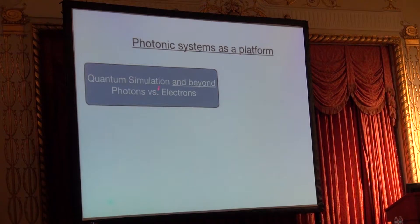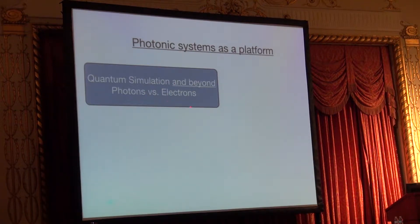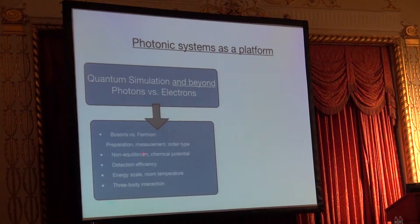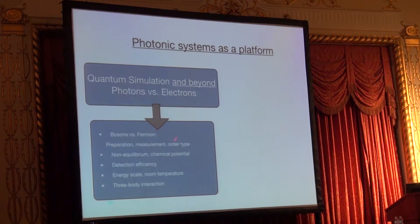So simulating interesting dynamics in photonic systems. But once we try to translate these quantum models for photons, we realize there are some fundamental aspects that are different. That takes us actually beyond the simple quantum simulation we had in mind. For example, photons are bosons and electrons are fermions, and that has a deep implication in terms of the types of orders we expect — for example, the type of topological orders.